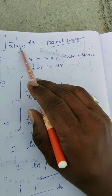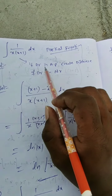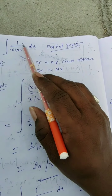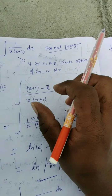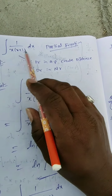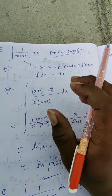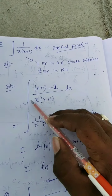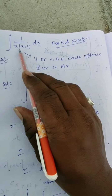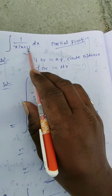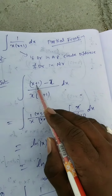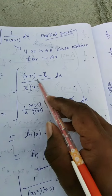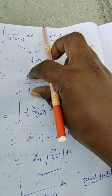Whenever you have a product like this in the denominator, we have to create the numerator as the difference of the denominator factors — the same technique as in inverse trigonometry. So this can be written as x plus 1 minus x upon x into x plus 1.